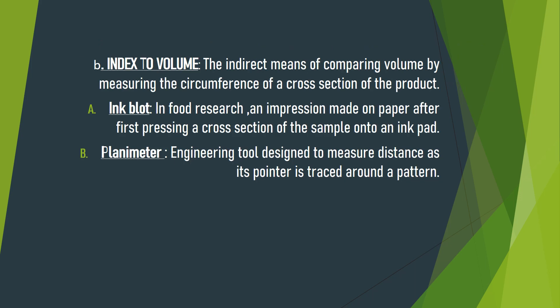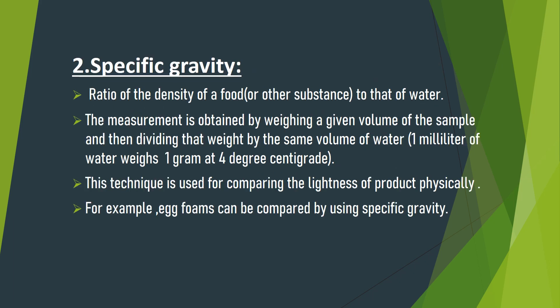An indirect means of comparing volume involves measuring the circumference of a cross section of the product. The ink blot method uses an impression made on paper after pressing a cross section of the sample onto an ink pad, and is usually used to find out the volume of baked products. The planimeter is an engineering tool designed to measure the distance as its pointer is traced around a pattern.